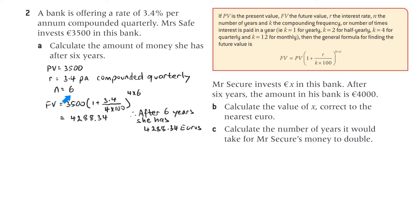Question 2. K is 4, N is 6. We put everything in the formula and we get the future value: 4,288 Euro and 34 cents after 6 years.